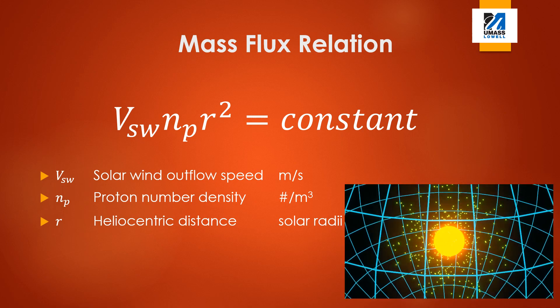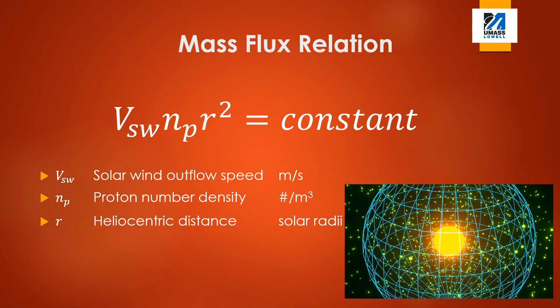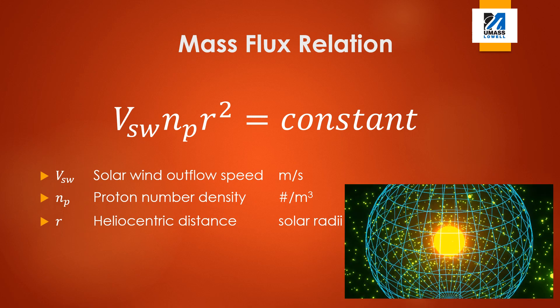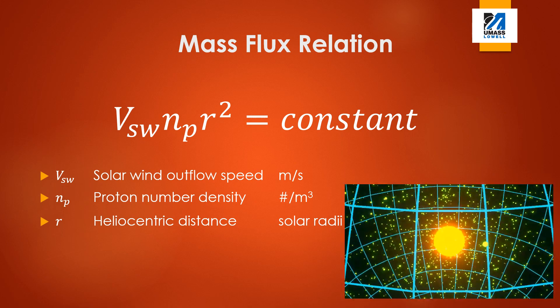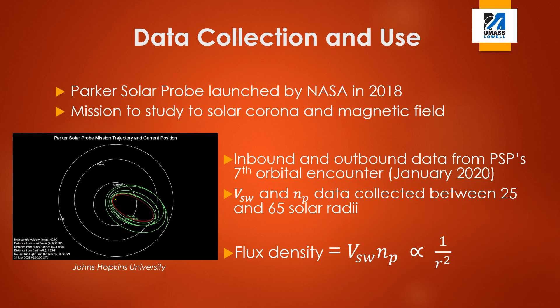Because the surface area of said sphere is proportional to R squared, the solar wind mass flux is as well. The Parker Solar Probe is a space probe launched by NASA in 2018 with a mission to study the solar corona and magnetic field. We test the validity of the mass flux relation by using in-situ solar wind measurements from the Parker Solar Probe's seventh orbital encounter in January 2020.